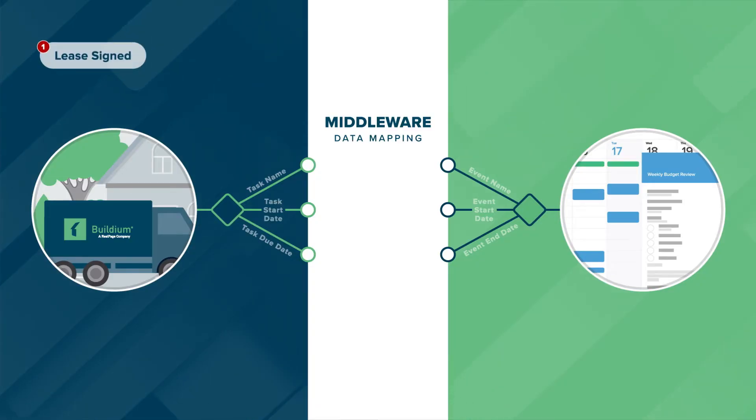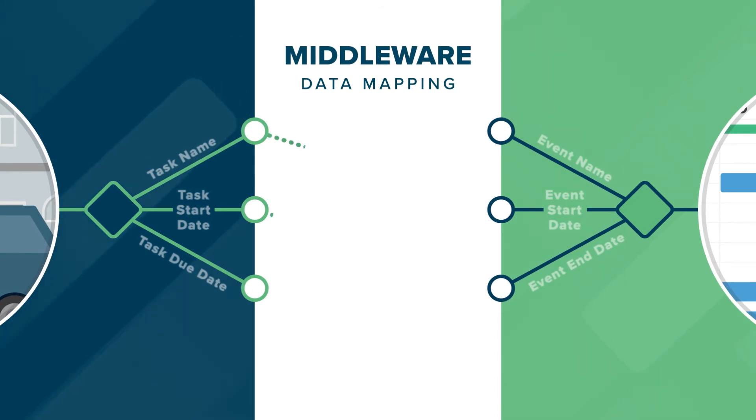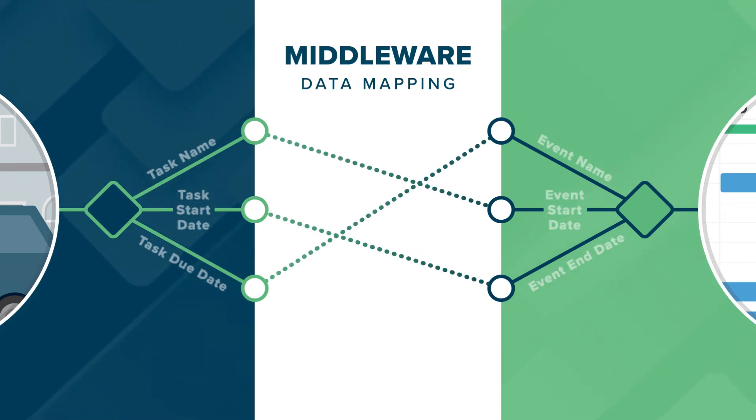You can use almost any event in the API to trigger an action. Anytime a new lease is signed, that event triggers the whole data flow. The middleware takes the data from Buildium and translates the request to Google Calendar. First, the middleware pulls the Buildium API — the courier — for newly signed leases. Next, when the middleware sees the new tasks are created in Buildium, it sends a request to the Google Calendar API — the shopkeeper — to create that same task in the Google Calendar application as an event.